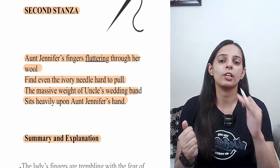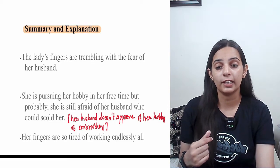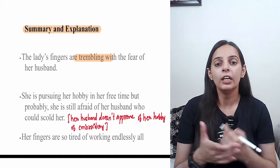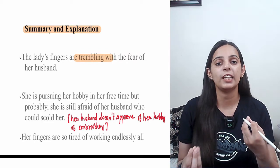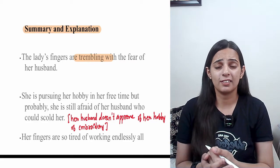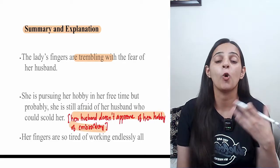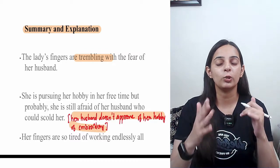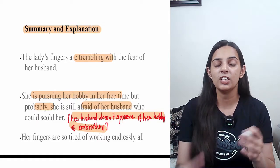Now let's look at this stanza. Aunt Jennifer's fingers are anxious and scared. Why is she scared? Her husband does not approve of her hobby of embroidery. But he is so strong that she has to keep doing this hobby and prove she can do it. She is pursuing her hobby in her free time, but she is afraid of her husband's reaction.